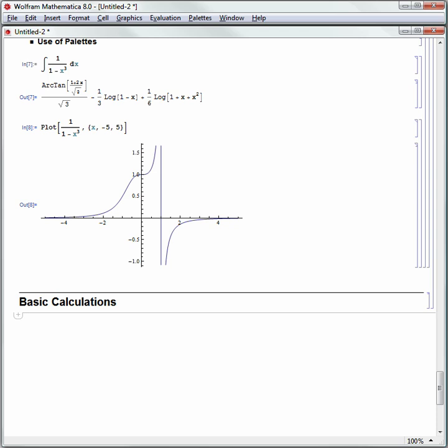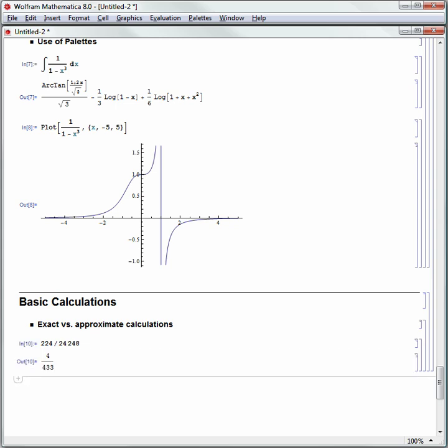I'm going to make a new subsection. I'll call this exact versus approximate calculations. Now, one of the nicest things about Mathematica in doing calculations is that it always gives you an exact answer if it can. For example, let's take 224 divided by 24,248, and hit shift enter to run that calculation. It gives us a result back of 4 over 433. That's the exact answer reduced as far as possible.